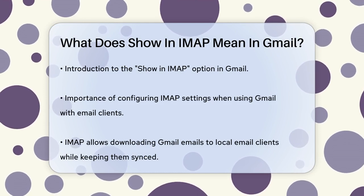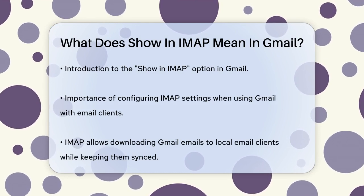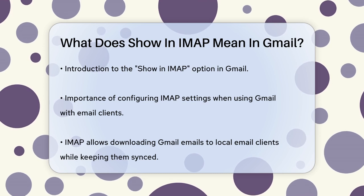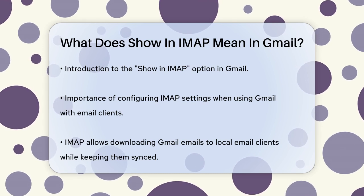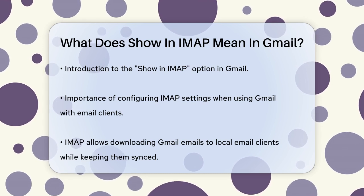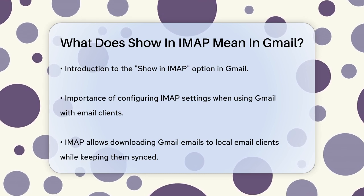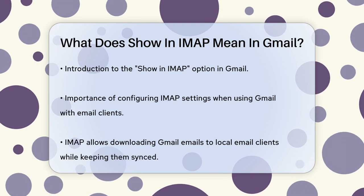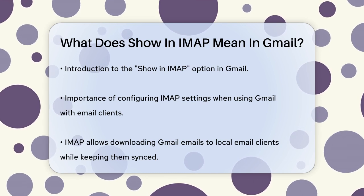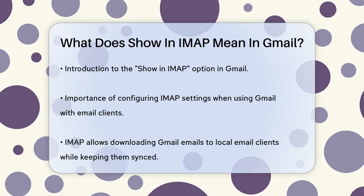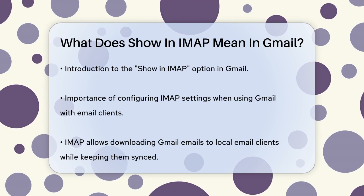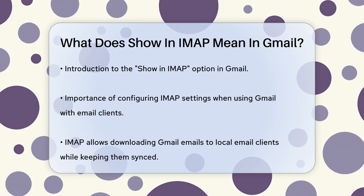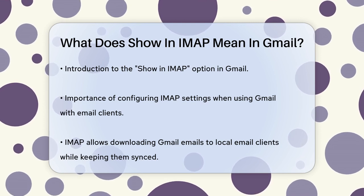When you use Gmail with an email client like Outlook or Mailbird, you need to configure your IMAP settings. IMAP, or Internet Message Access Protocol, allows you to download your Gmail emails to your local email client and keep everything in sync with the Gmail servers.